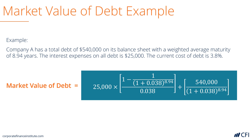We take the $25,000 interest expense and multiply it by 1 minus 1 over 1 plus 0.038, which is the cost of new debt, raised to the power of the number of years to maturity, and divide all of that by the cost of debt. We then add to that the current book value of debt on the company's balance sheet, divided by 1 plus 3.8% raised to the power of the number of years. And we get $573,427 as the market value.